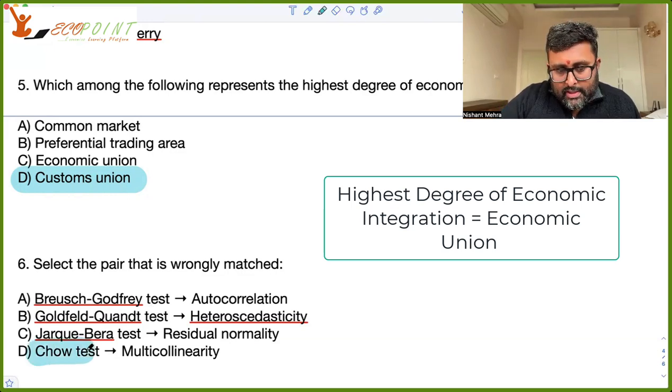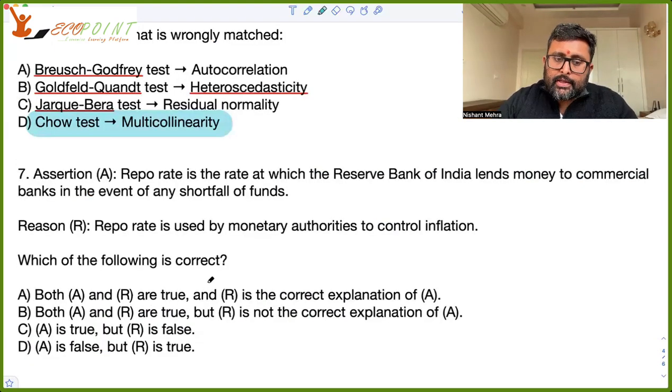Assertion is that repo rate is the rate at which the RBI lends money to the commercial banks in the event of any shortfall of funds. Yes, it does. So this is the rate at which RBI is lending to the commercial banks. So assertion is right. Repo rate is used by monetary authorities to control inflation. This is also correct. Right. This is also correct.